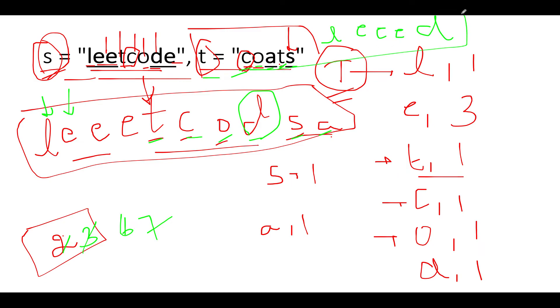One anagram that we generated happens to be "coats" + l + three e's + d, and the other anagram that we generated was "leetcode" followed by a and s. Whatever you are seeing in green happens to be new additions that we have made to the strings s and t in order to make them anagrams of each other. To conclude it further, let's quickly walk through the coding section.